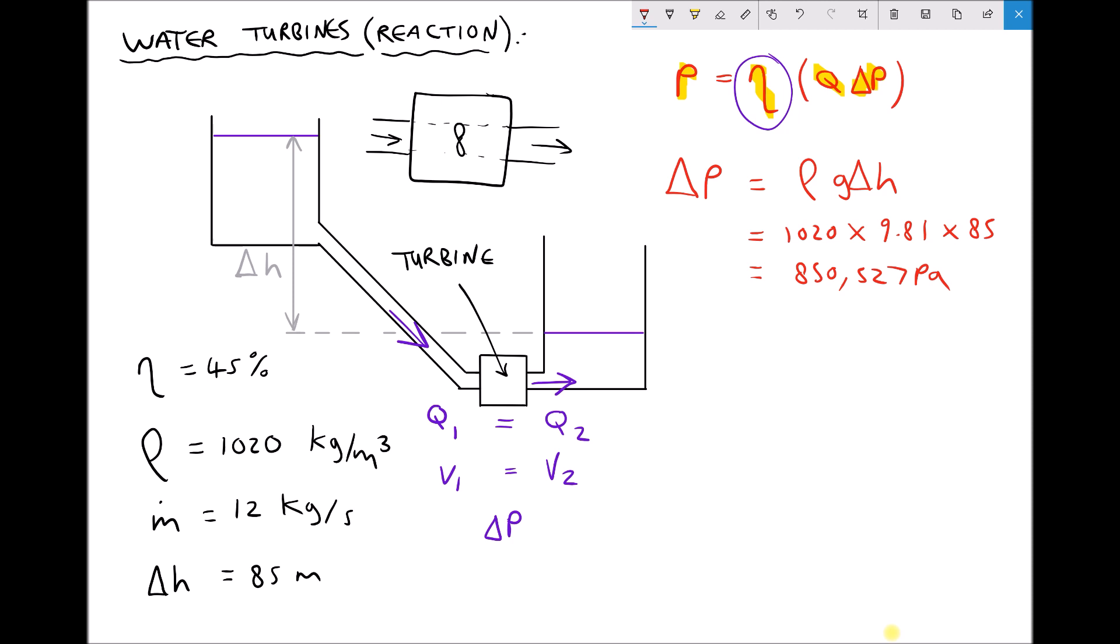We already have our efficiency as 45%, so as a decimal that's 0.45, and we also have our mass flow rate. But note that it isn't the mass flow rate that we want, it's the volume flow rate. Volume flow rate Q is just mass flow rate divided by density.